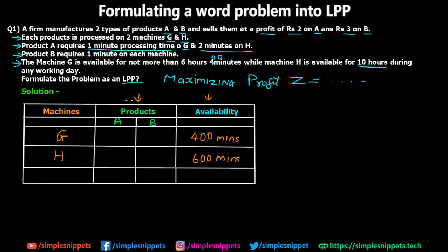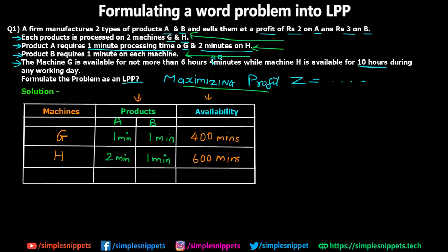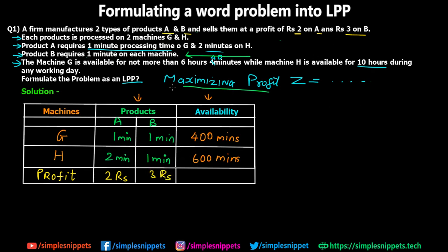Now let's fill out the product columns for A and B. Product A requires one minute processing time on machine G and two minutes on machine H. Product B requires one minute on machine G and one minute on machine H as well. We also add a profit row: from the problem statement, product A gives a profit of rupees 2 and product B gives a profit of rupees 3. So this completes the table.